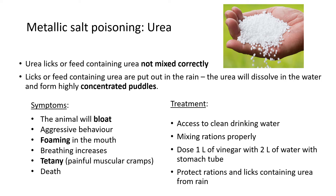Treatment for urea poisoning: first, make sure the animal has clean drinking water. Second, mix the rations properly to ensure the animal doesn't take in too much urea in the first place. Third, dose the animal with one liter of vinegar diluted with two liters of water — a vinegar-water solution, also administered with a stomach tube in severe cases — to flush out the poison from the body.